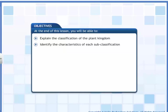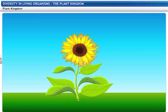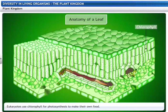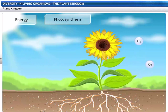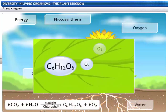At the end of this lesson, you will be able to explain the classification of the plant kingdom and identify the characteristics of each subclassification. Members of the plant kingdom are called Plantae. They are set apart from other organisms by two unique characteristics: they are all eukaryotes, and they use chlorophyll for photosynthesis to make their own food. Photosynthesis is the process by which plants use energy from the sun to convert water and carbon dioxide into sugar, releasing oxygen into the atmosphere.